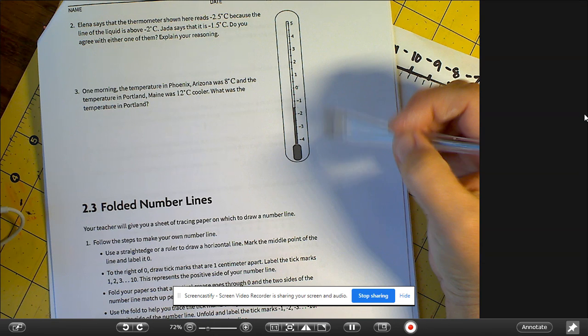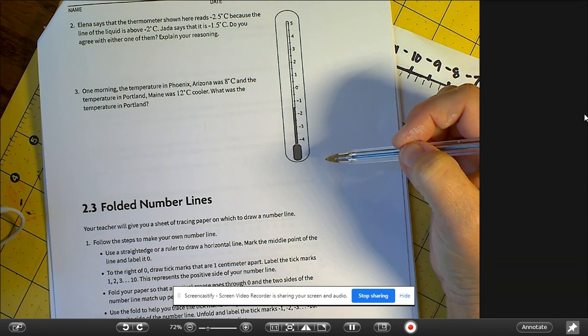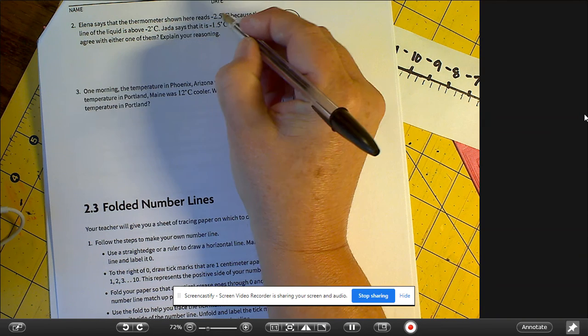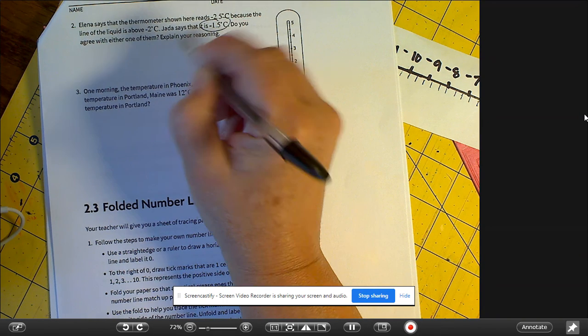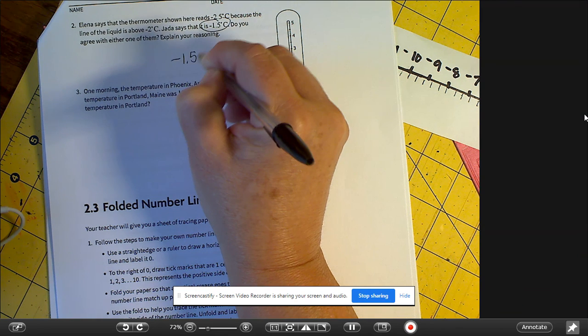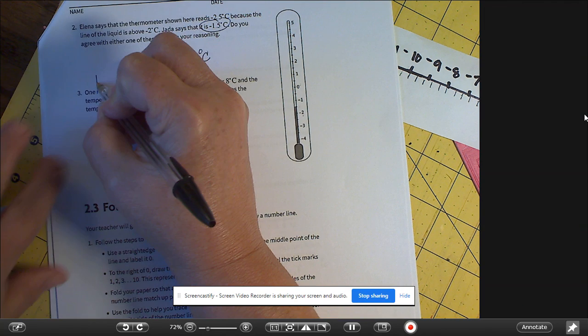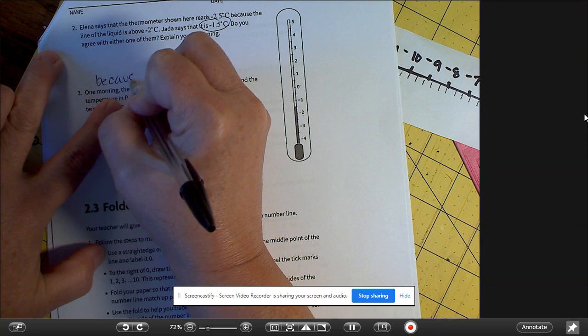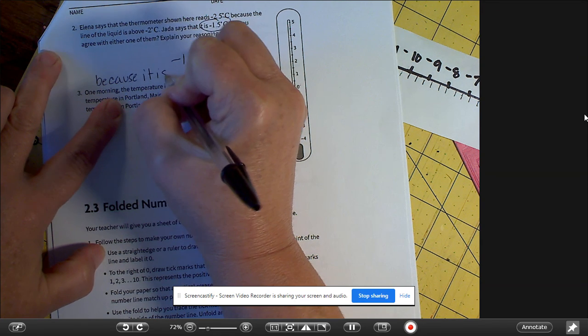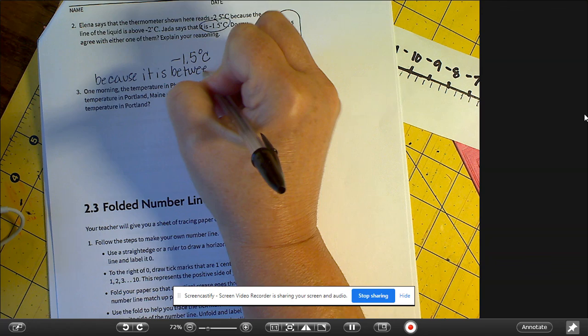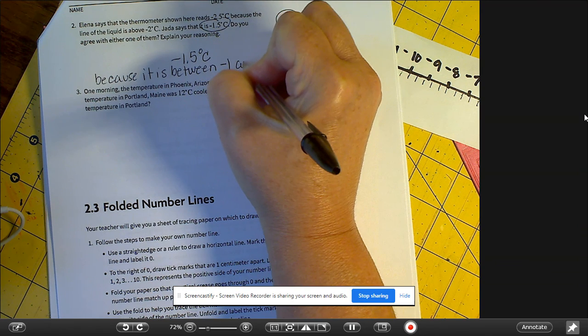And even though the numbers are getting larger, it's actually getting smaller. But it's between negative 1 and negative 2, so it's going to be Jada that is correct, negative 1.5 degrees Celsius. And the reason is because it is between negative 1 and negative 2.